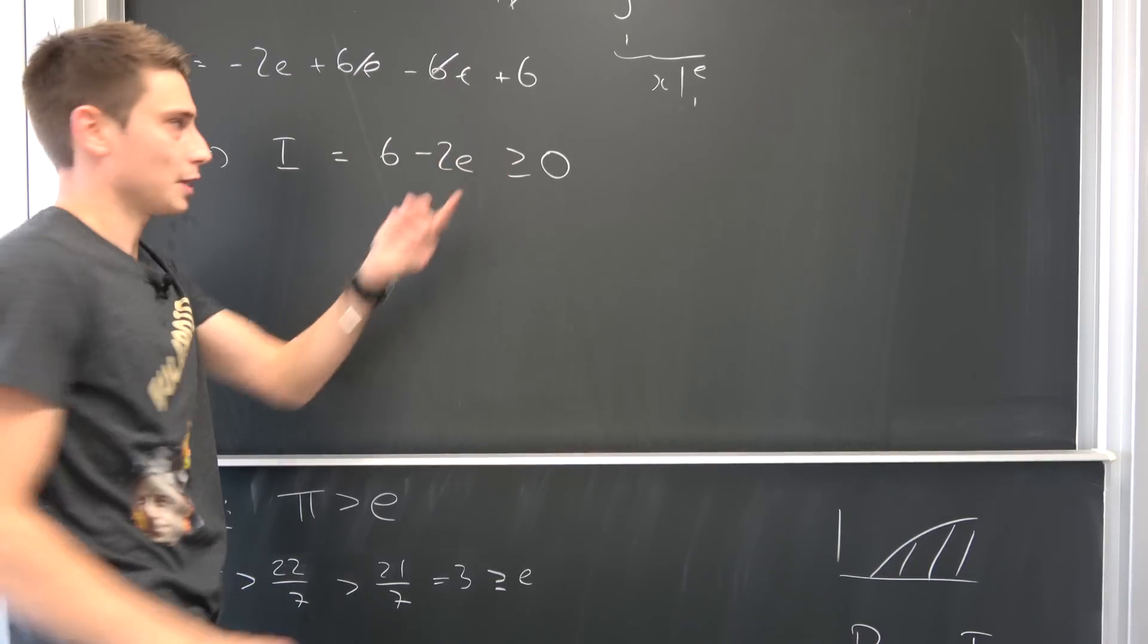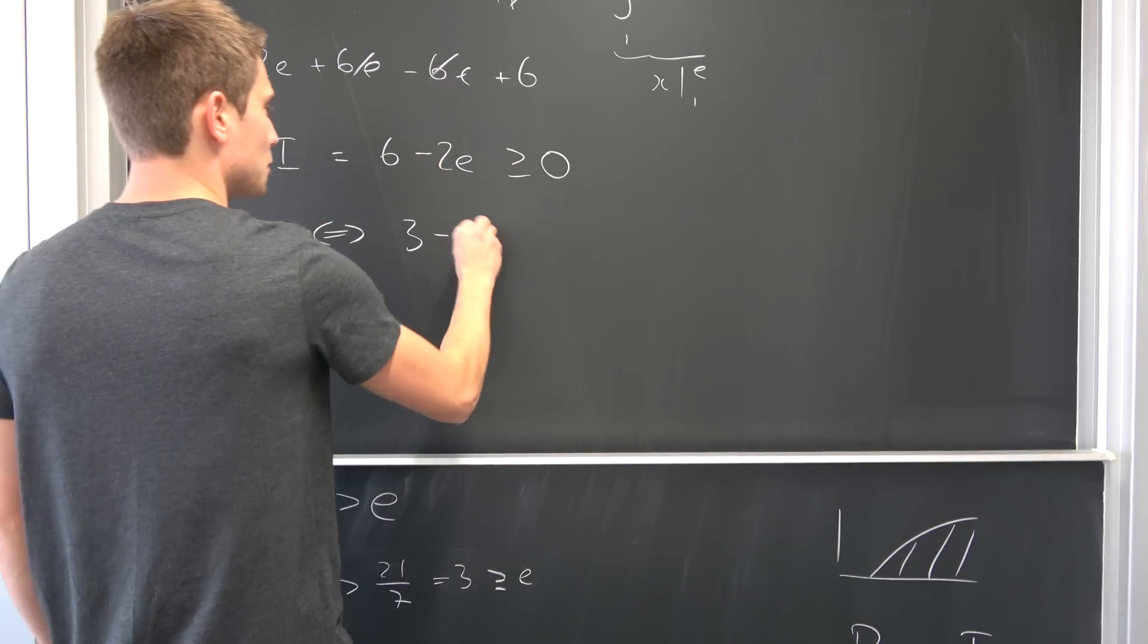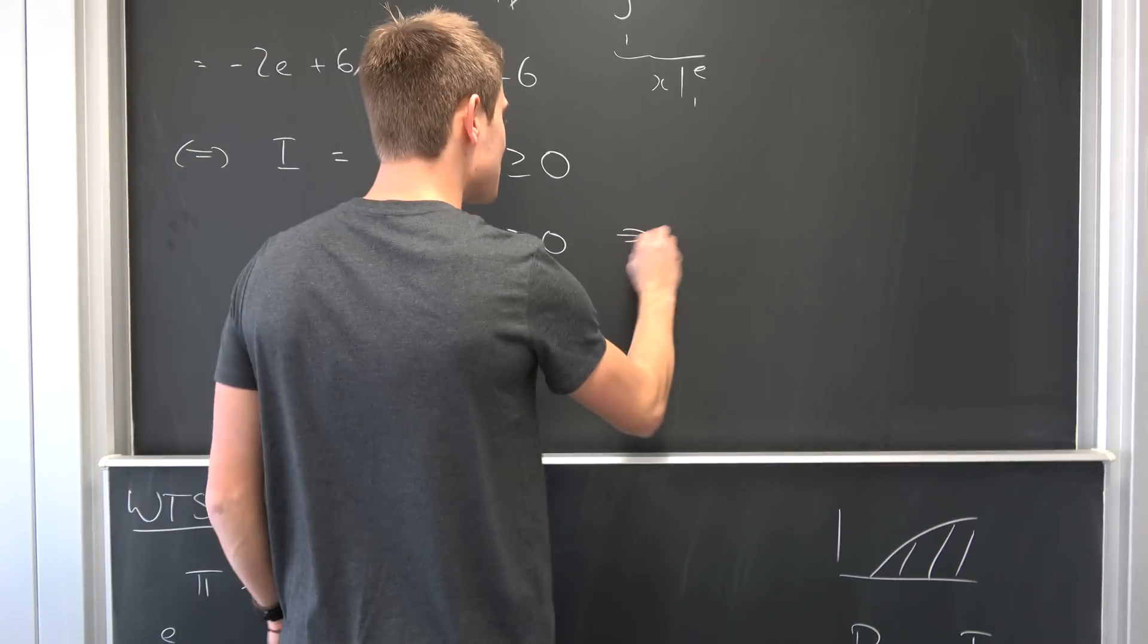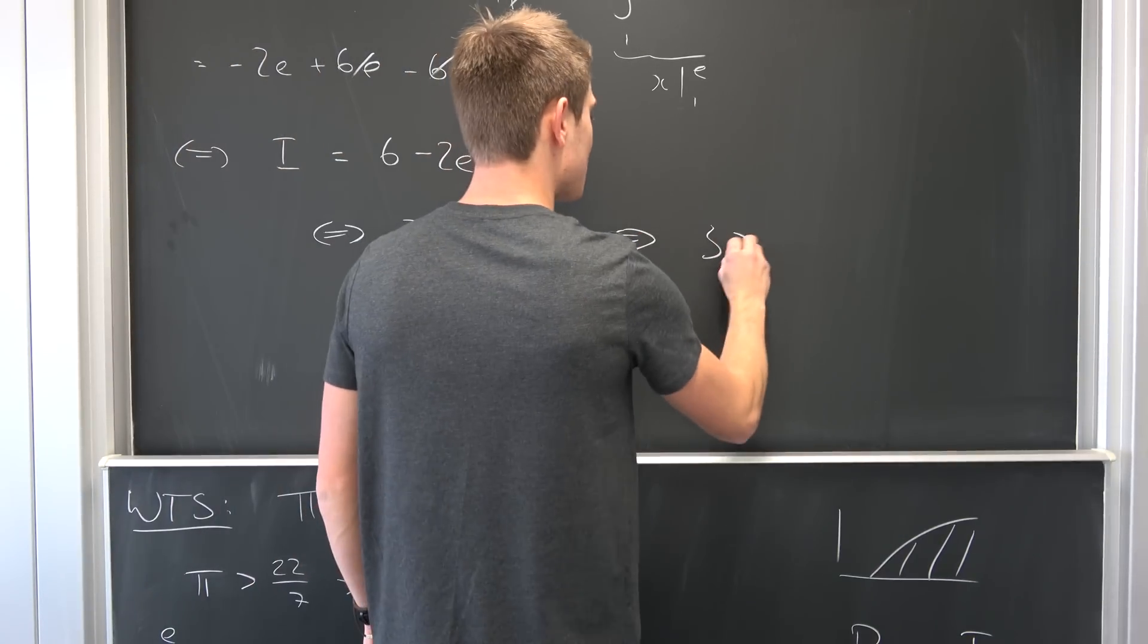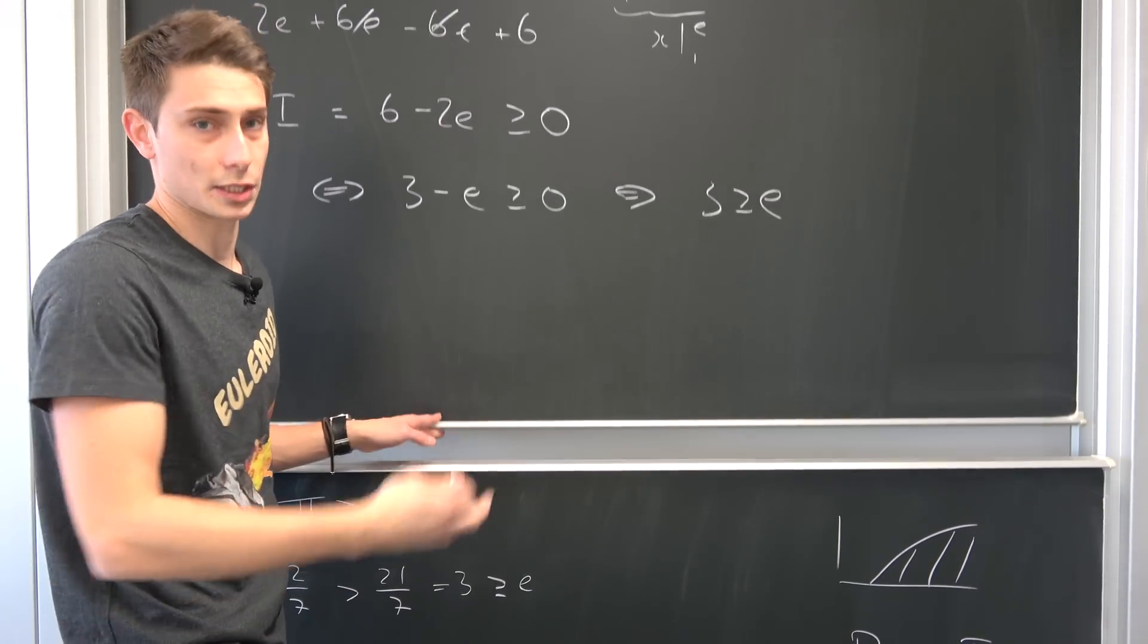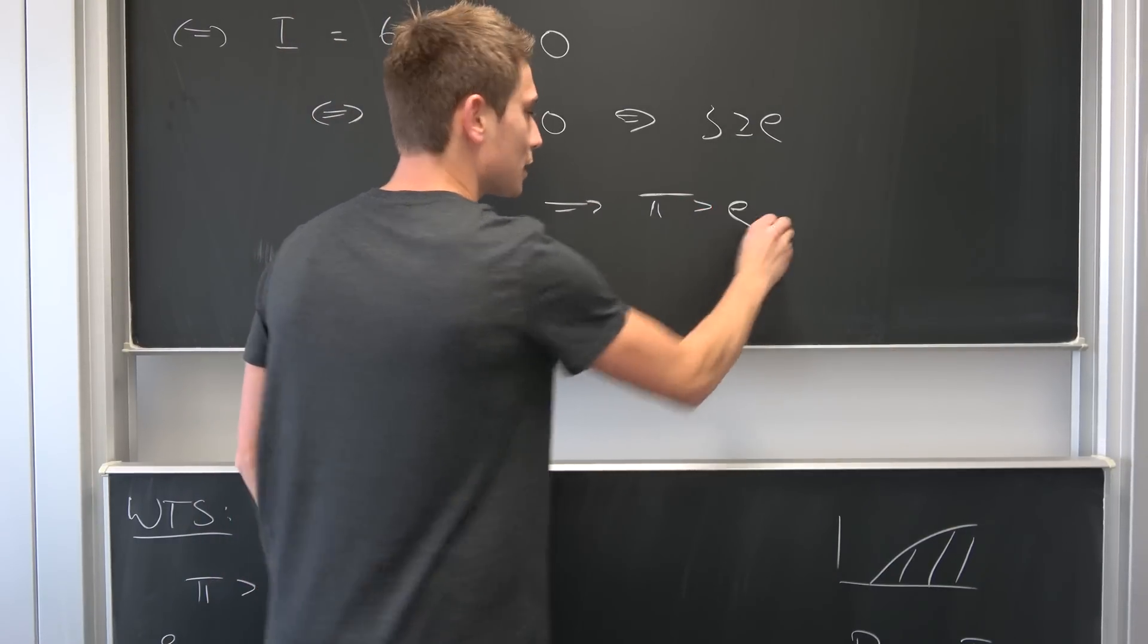And well 2 is not equal to 0. So why not divide both sides by 2. That's equivalent to saying that 3 minus e is greater or equal to 0. And now we can just add e on both sides. So that's equivalent to saying 3 is greater or equal to e. And like I said by our transitivity of this order relation, we also know that π is now greater than e. And then we are done. That's quite nice proof.